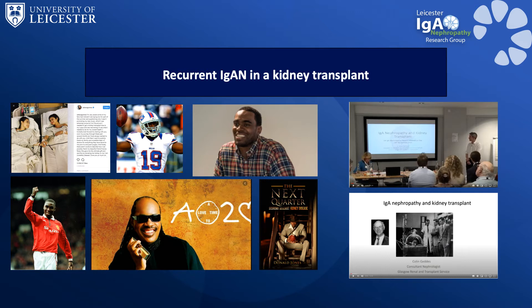If you do have a kidney transplant then you're in very good company. On screen here are a few famous people who within the last few years have received a kidney transplant: Selena Gomez, Andy Cole, and Stevie Wonder — all of whom had transplants not for IgA nephropathy. Then you have Don Jones, an all-star NFL player who played for most of his career with IgA nephropathy. He came to the Manchester Patient Information Day and gave a really great talk about what it's like to be an elite athlete and have kidney disease. He's written a book about his experiences which I would thoroughly recommend — how he lived with the disease, what it meant to him, and how he overcame IgA nephropathy to continue as a sportsman and eventually get a kidney transplant from his dad.